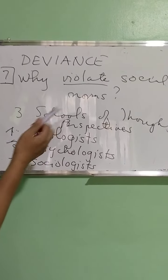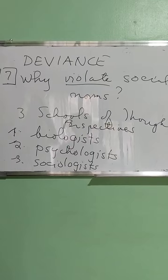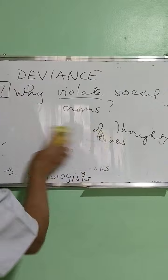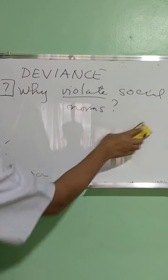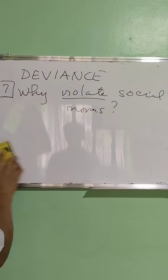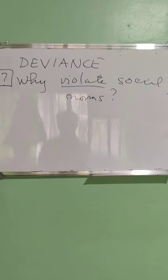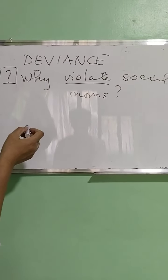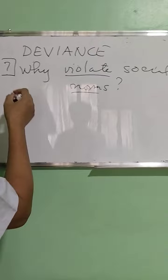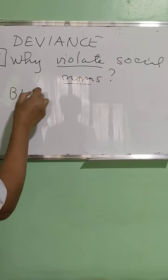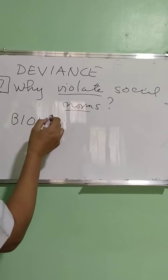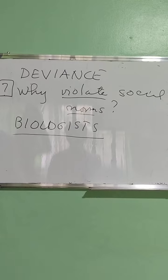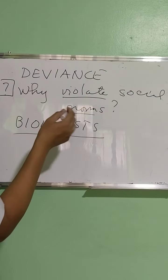Remember that in our society, even if there are rules, even if there are norms, even if there are laws, still people violate. There are people who violate these norms. So what are the reasons why these individuals violate certain norms? From the biologists' point of view, how come individuals violate certain norms? Well, because of atavism — something that is abnormal — atavism meaning abnormal genetic traits.